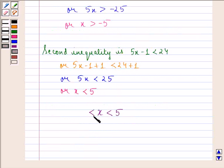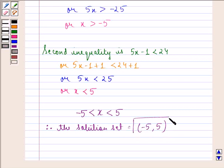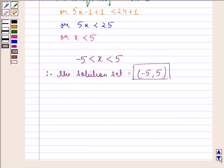Therefore the solution set is (-5, 5), where -5 and 5 are both not included. Now let us see the graphical representation of the solution on the number line.